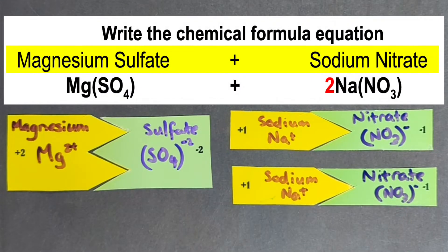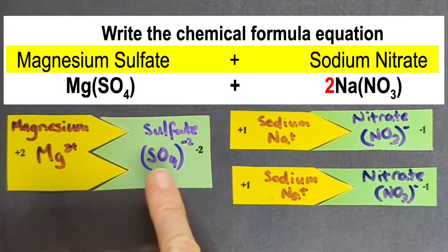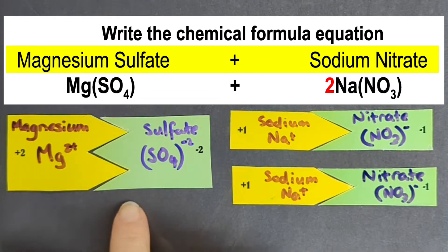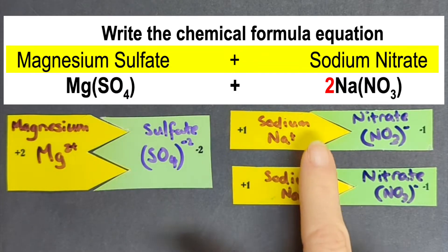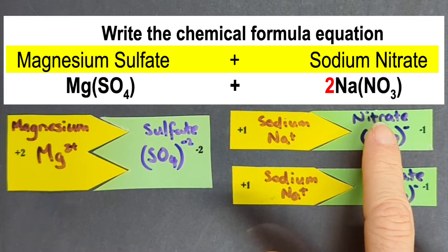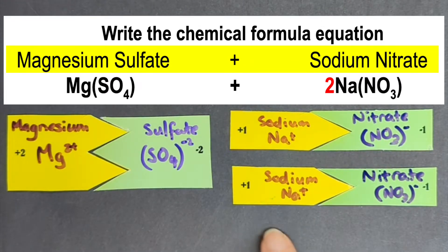So when you're writing out the formula, the products would be magnesium sulfate: Mg, brackets, SO4, brackets, but you've got two sodium nitrates. So your formula would be 2, Na,